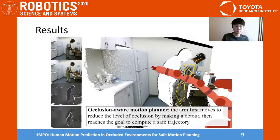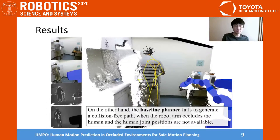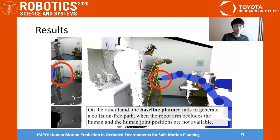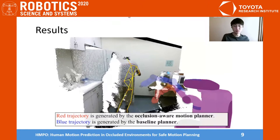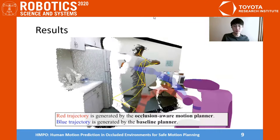On the other hand, the baseline planner fails to generate a collision-free path when the robot arm occludes the human and the human joint positions are not available. The red trajectory is generated by the occlusion-aware motion planner, and the blue trajectory is generated by the baseline planner.